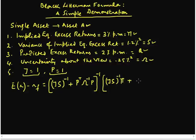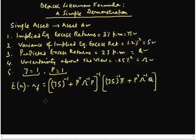Plus we have P transpose — the transpose of our link matrix — multiplied by omega inverse times our views vector Q. So let us plug the numbers into our situation here.